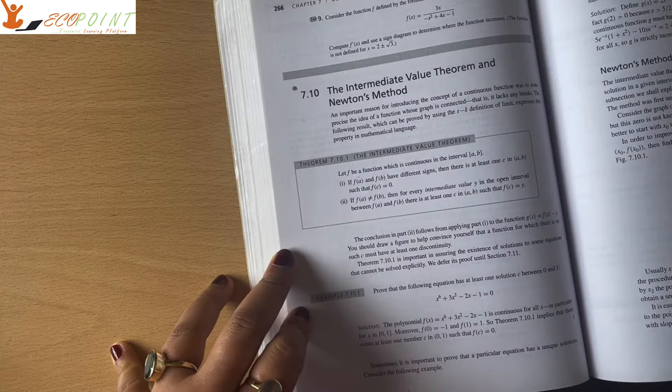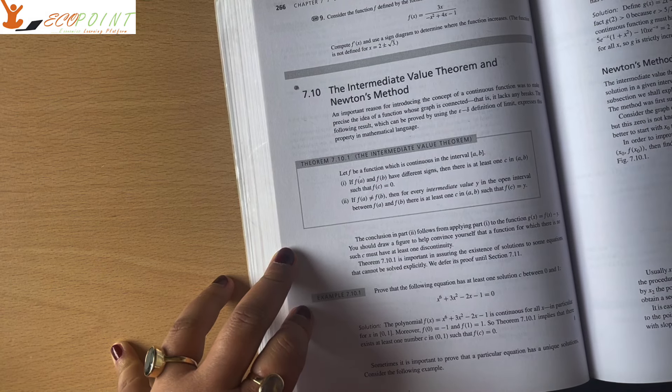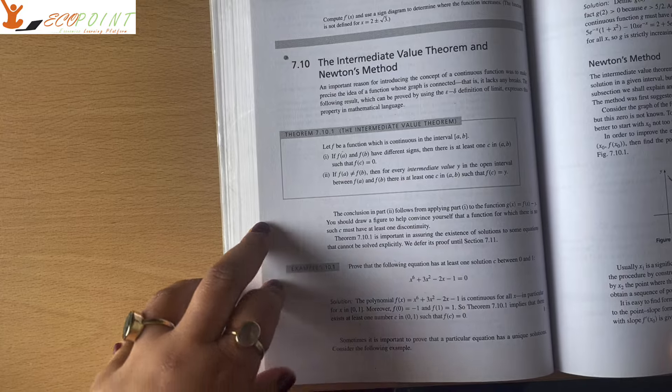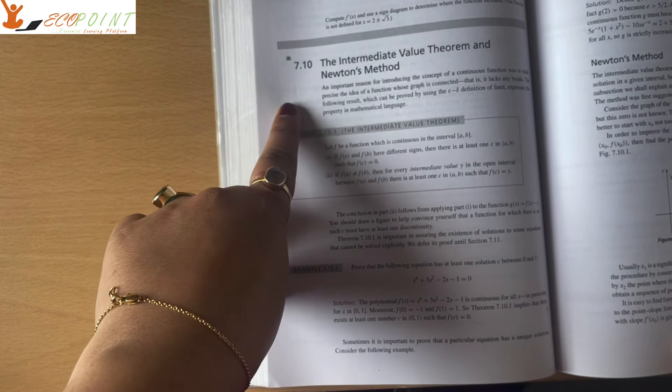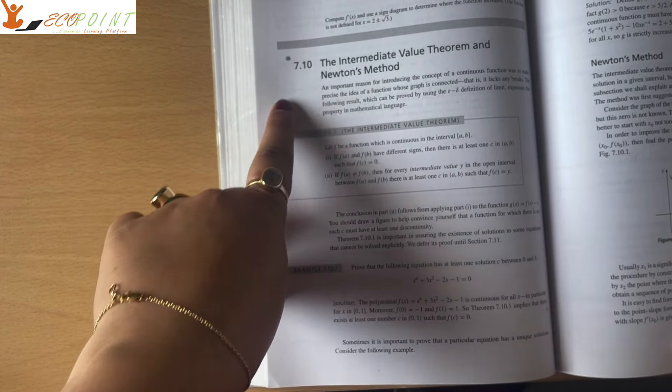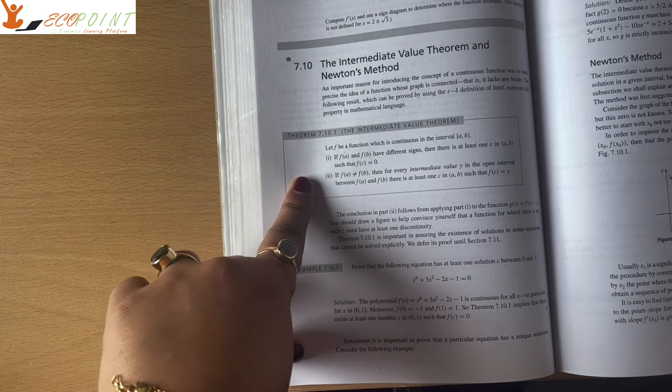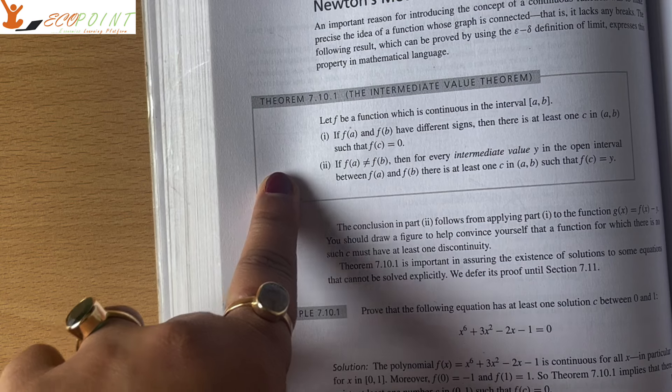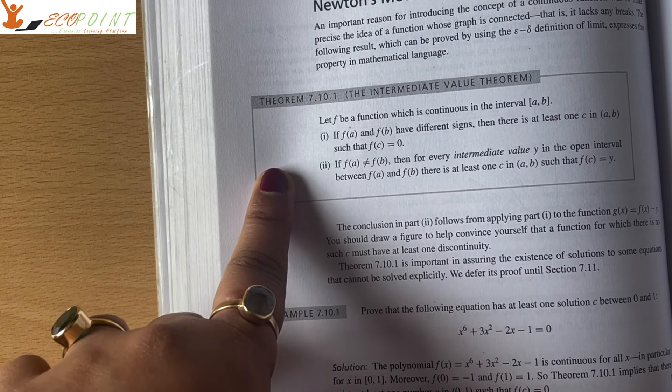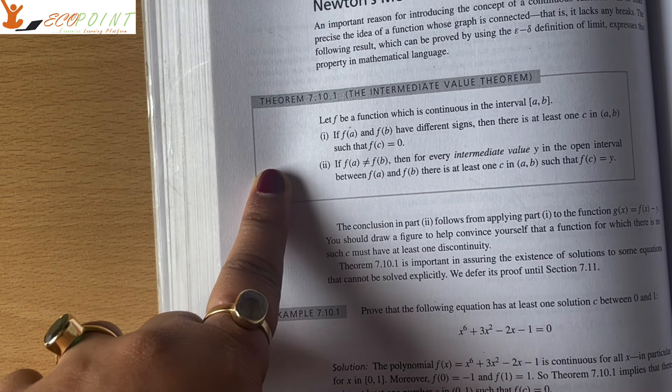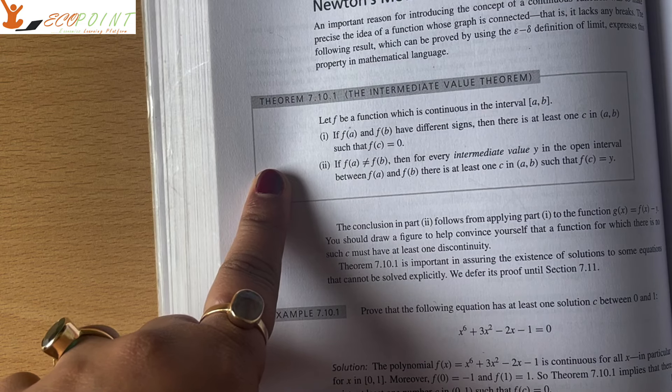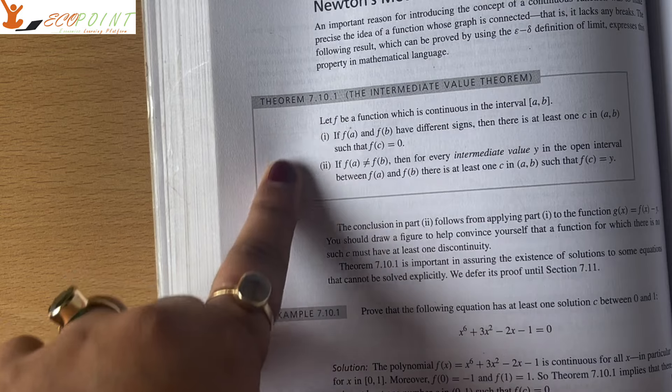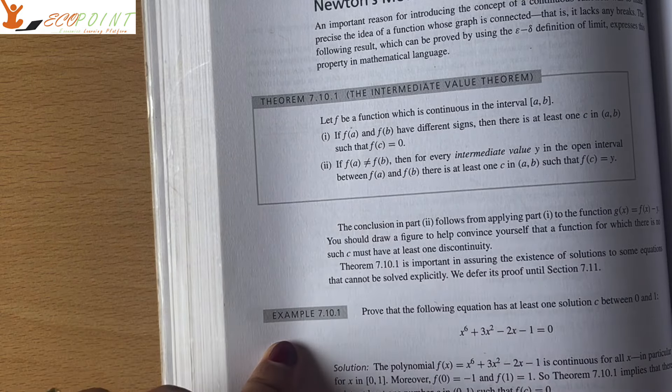You have to make notes of everything that is there in this book. What do you need to do? Aap ke paas jaise hi yahaan pe, for example, I am just taking an example, you have intermediate value theorem. Now intermediate value theorem, there must be some statements written out here. Look at the statements. Whatever these statements are saying, write the sense of it. Write down what you have understood out of it. You don't really have to prove it, prove it, but aapko us mein se kya samajh aaya, wo aapko likhna bohot zaroori hai. Understanding of this is very important.